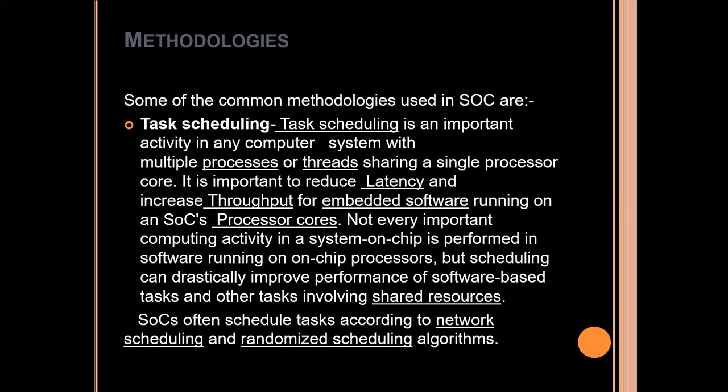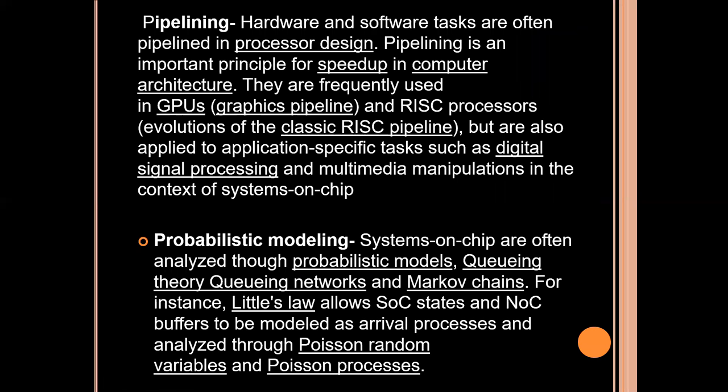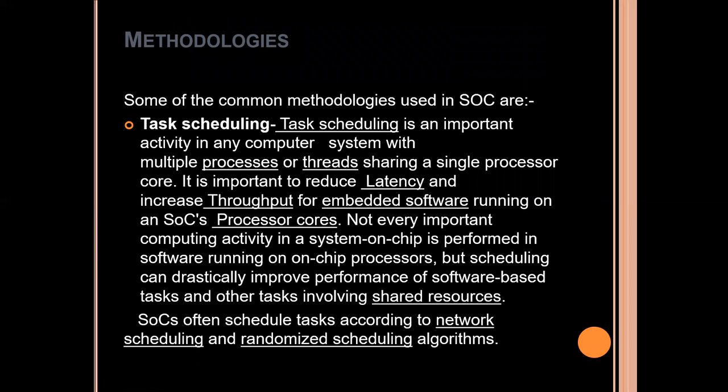Now let's discuss some of the methodologies used in SoC. Task scheduling, pipelining, and probabilistic modeling are three common methodologies used in SoC. Task scheduling is an important activity in any computer system with multiple processors or threads sharing a single processor core. It is important to reduce latency and increase throughput for embedded systems running on an SoC's processor core. SoCs offer scheduled tasks according to network scheduling and randomized scheduling algorithms.